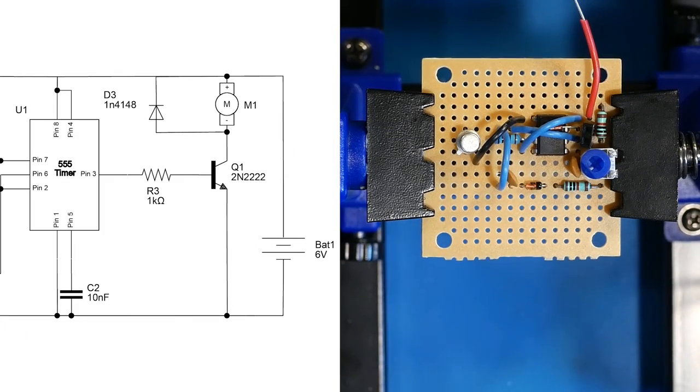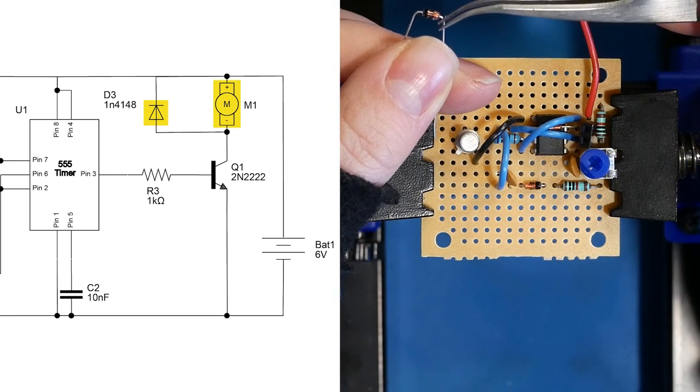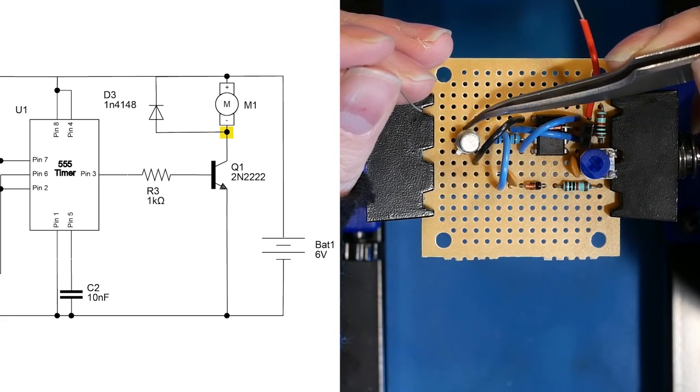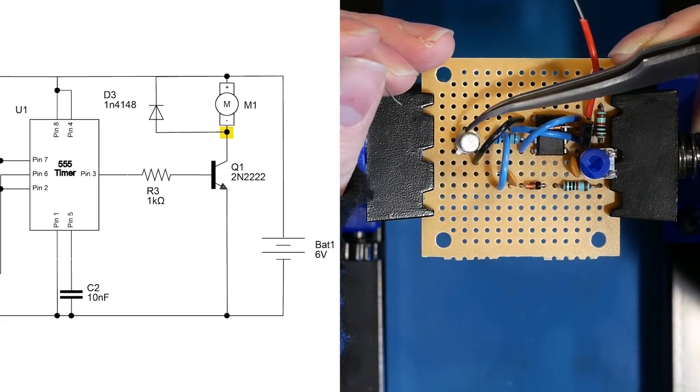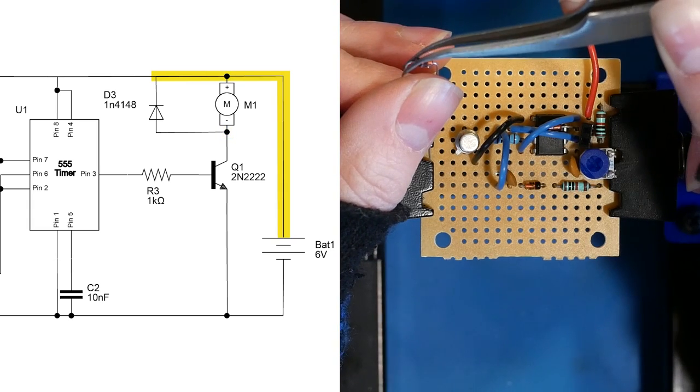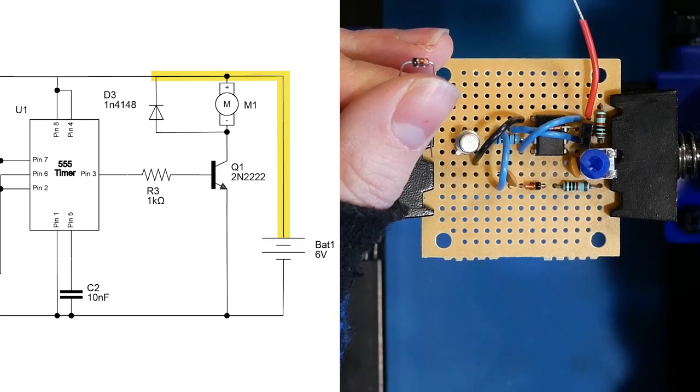All right, we're almost done with our circuit. All we need to do is add that last diode and pins for the motor. So we need to make sure that the positive pin of the diode and the negative portion of the motor are connected to the collector of the transistor and then that the negative pin of the diode and the positive pin of the motor end up going up to the positive power supply.